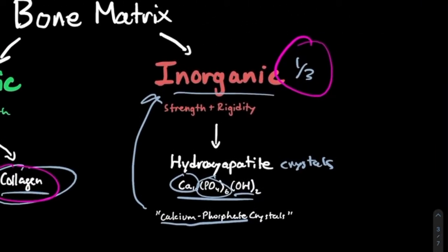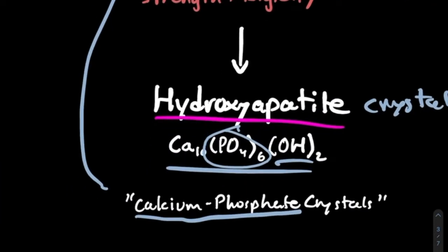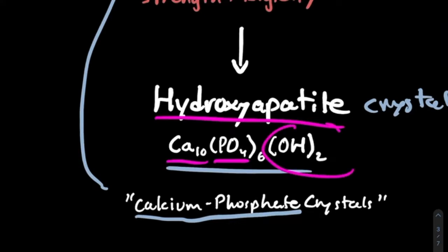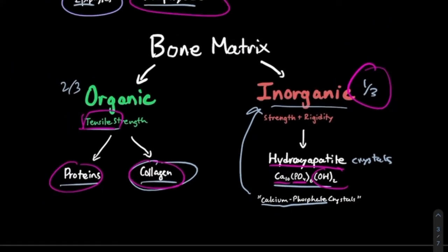The other one-third of our bone is inorganic, providing strength and rigidity through hydroxyapatite crystals. These crystals are composed of calcium and phosphate. If we have excess calcium and phosphate, we need to store it somewhere, and we also need to be able to access it for various bodily processes. Both calcium and phosphate play important roles in biochemistry, and bone serves as our reserve for these minerals.